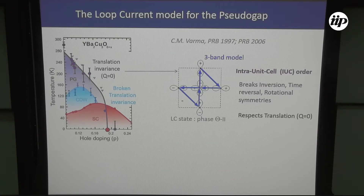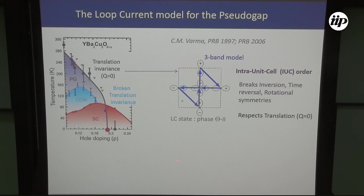I'm going to focus on one proposal made at the end of the 1990s by Chandra Varma, who postulated the existence of a magneto-electric state where you have loop currents running from copper to oxygen. This is called the CC-theta-2 phase, where you have two loop currents along the diagonal turning clockwise and anticlockwise. This phase breaks parity and time-reversal symmetry but preserves translation invariance.